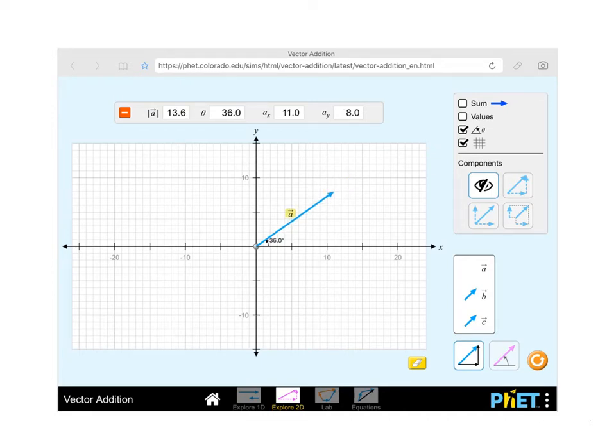In this video we're going to be taking a look at different ways of specifying vectors and their directions. We're using the PhET simulation vector addition in the Explore 2D scenario and I'd invite you to play with this and figure out exactly how it works and you can try different things on your own.